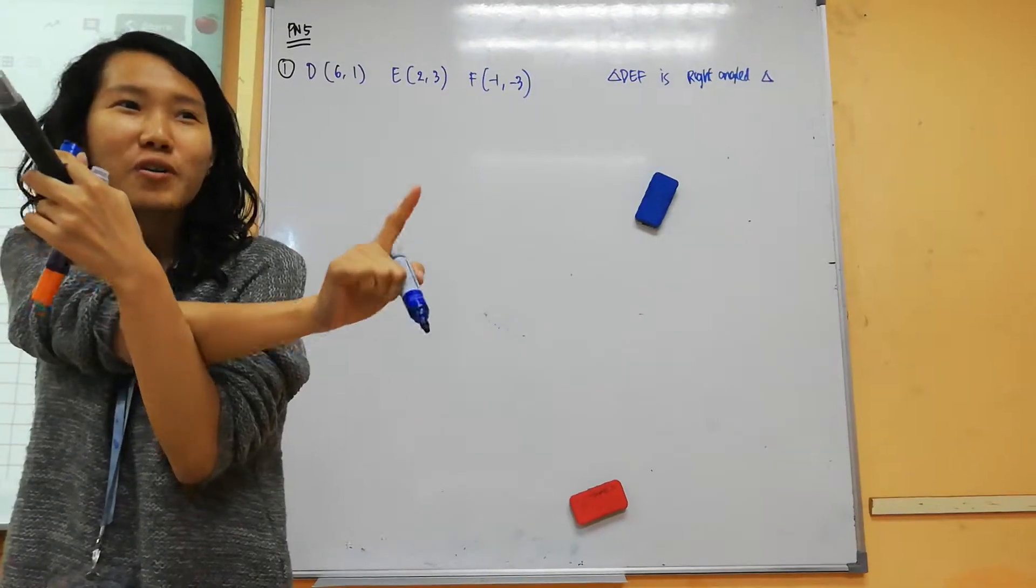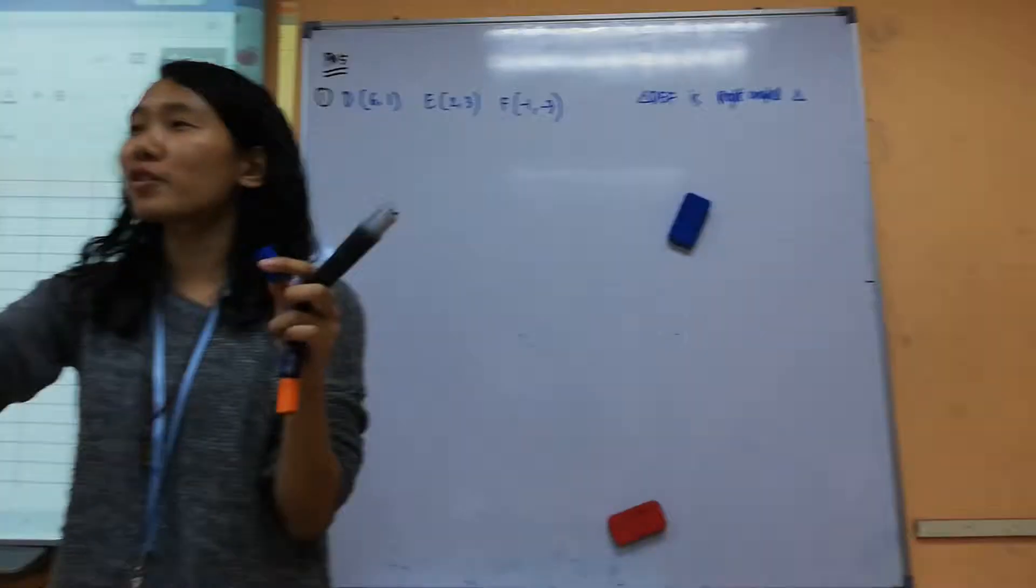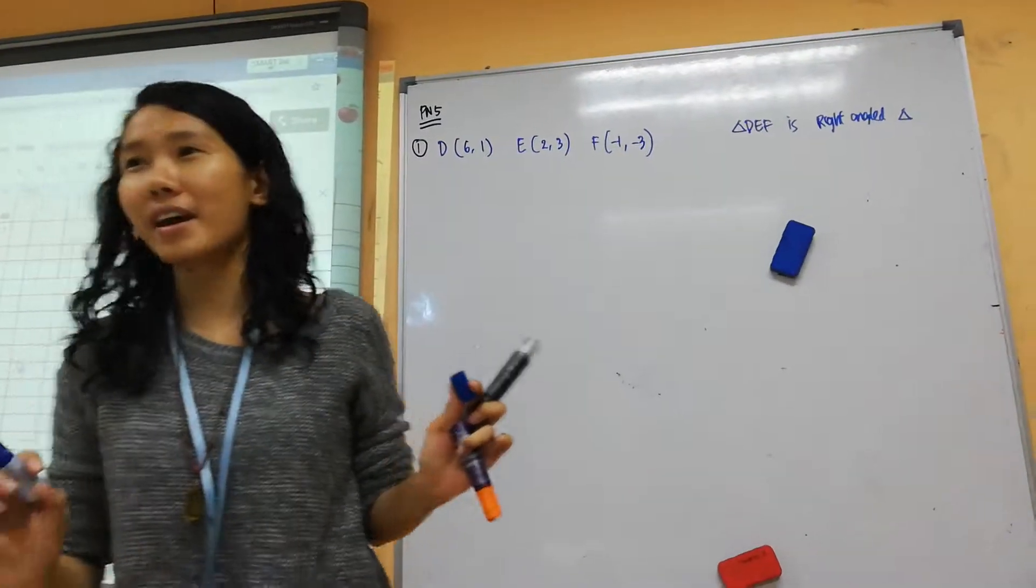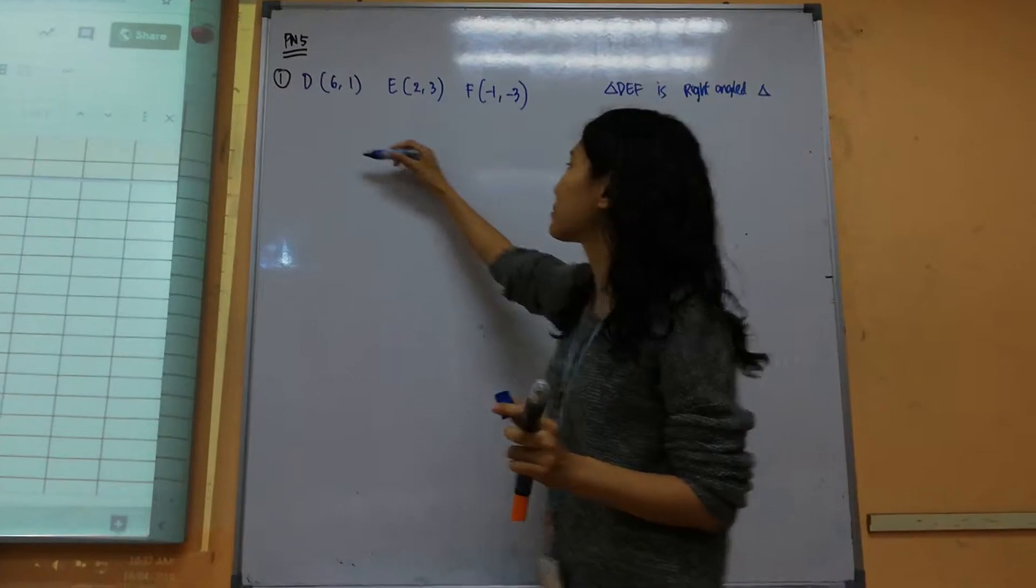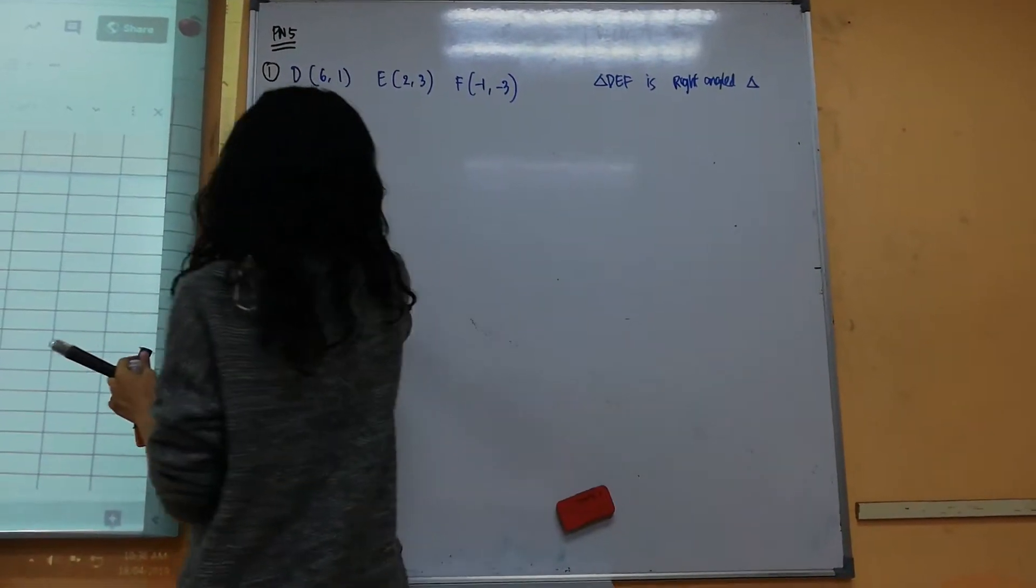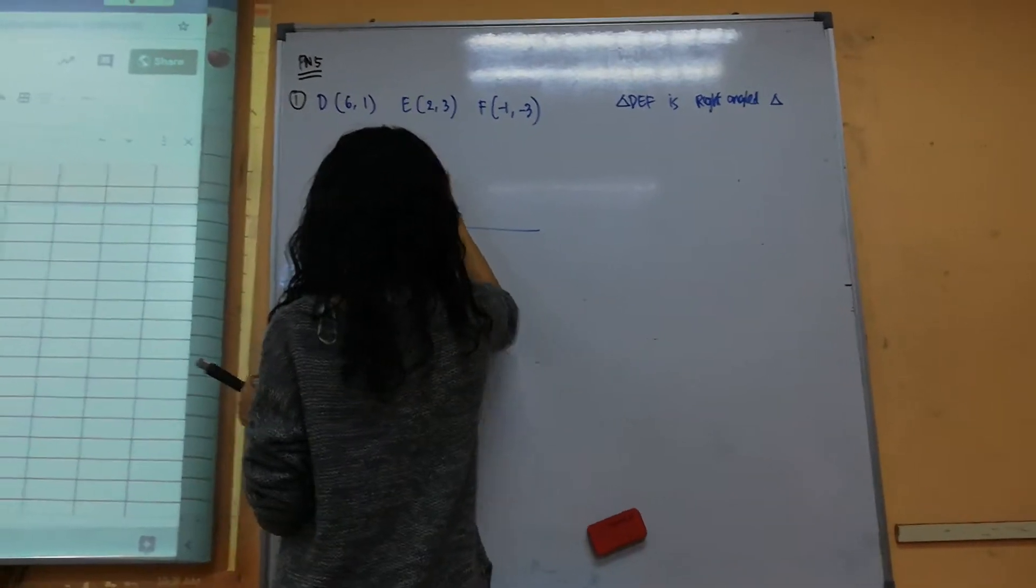Pythagoras theorem. Trigo, yes. Sine law. Okay, but you guys haven't learnt yet. Trigo is nice. Trigo is an easy way to get out.